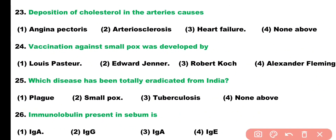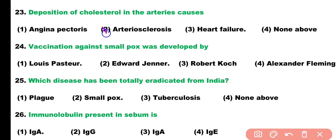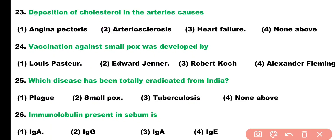Question number twenty-three: deposition of cholesterol in the arteries causes: angina pectoris, arteriosclerosis, heart failure, or none of these. Correct answer is option two — deposition of cholesterol in the arteries causes arteriosclerosis.